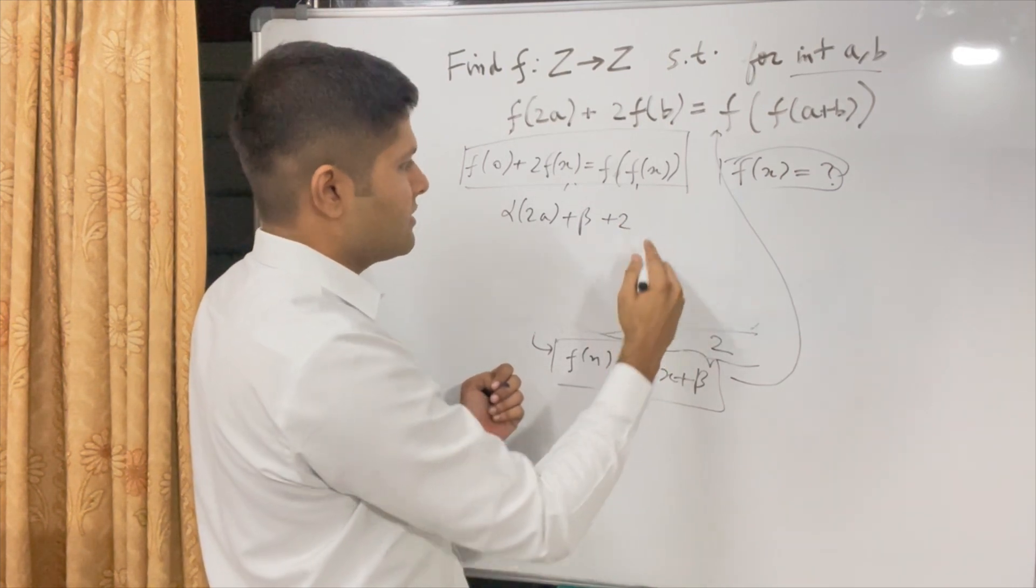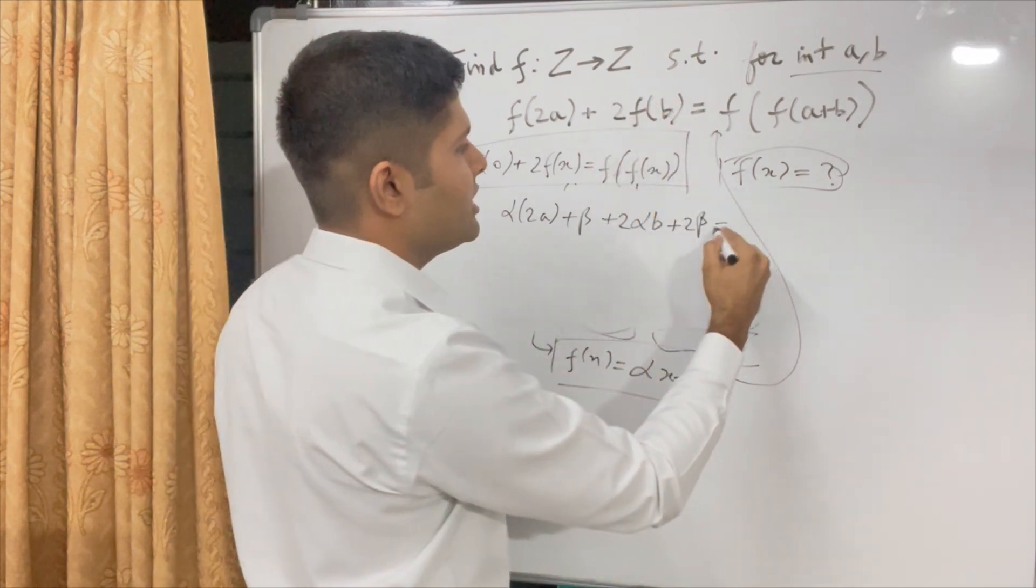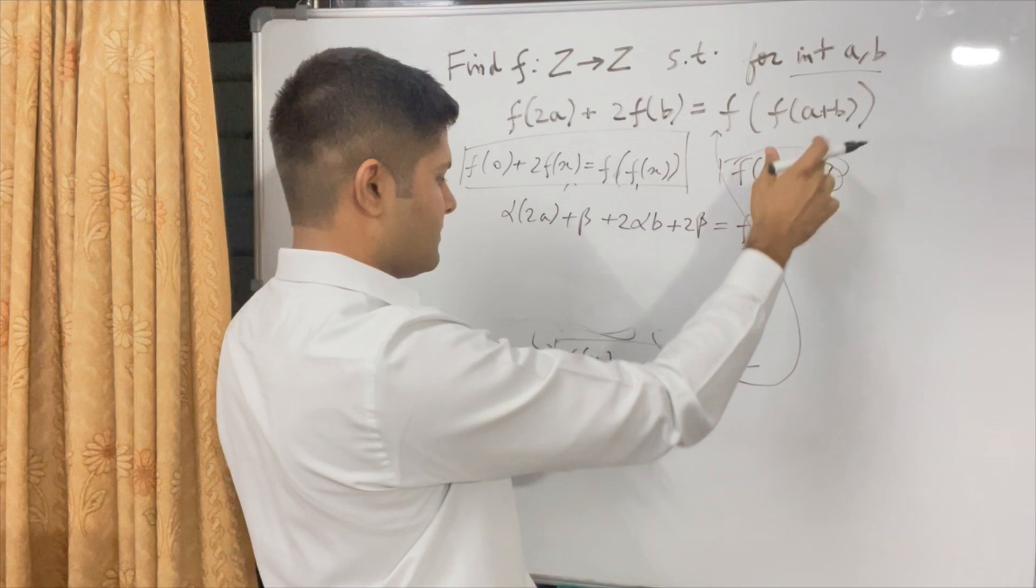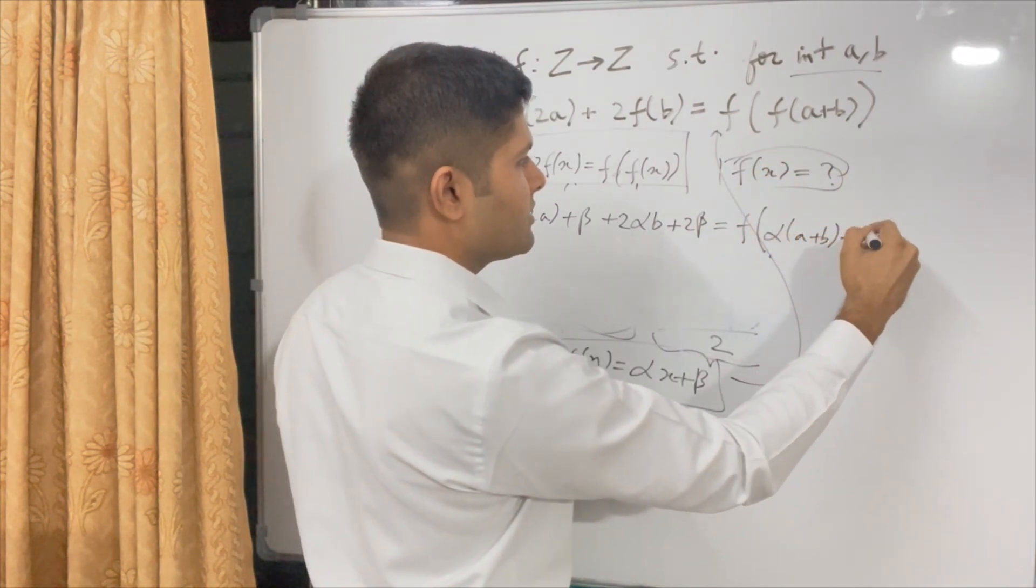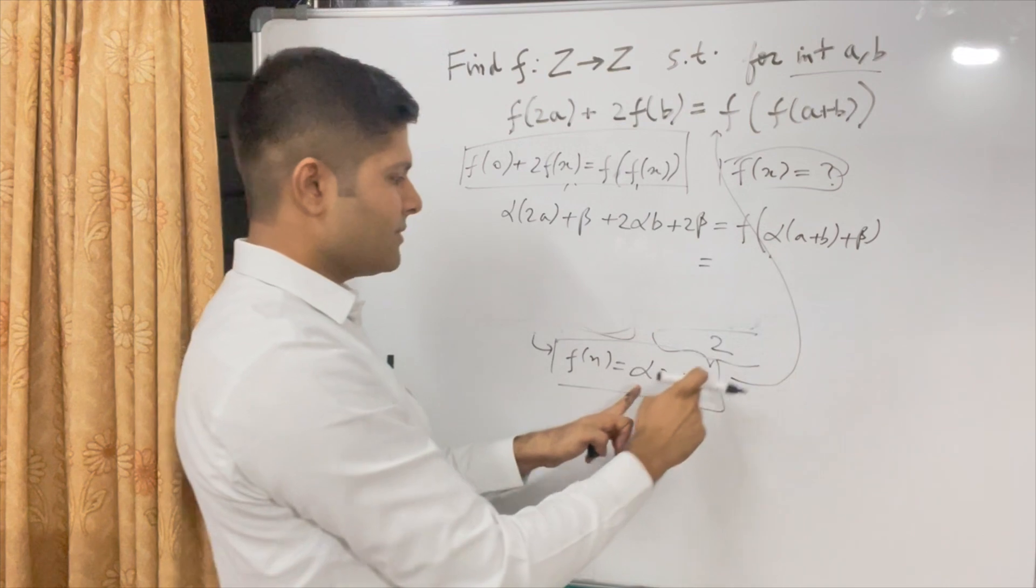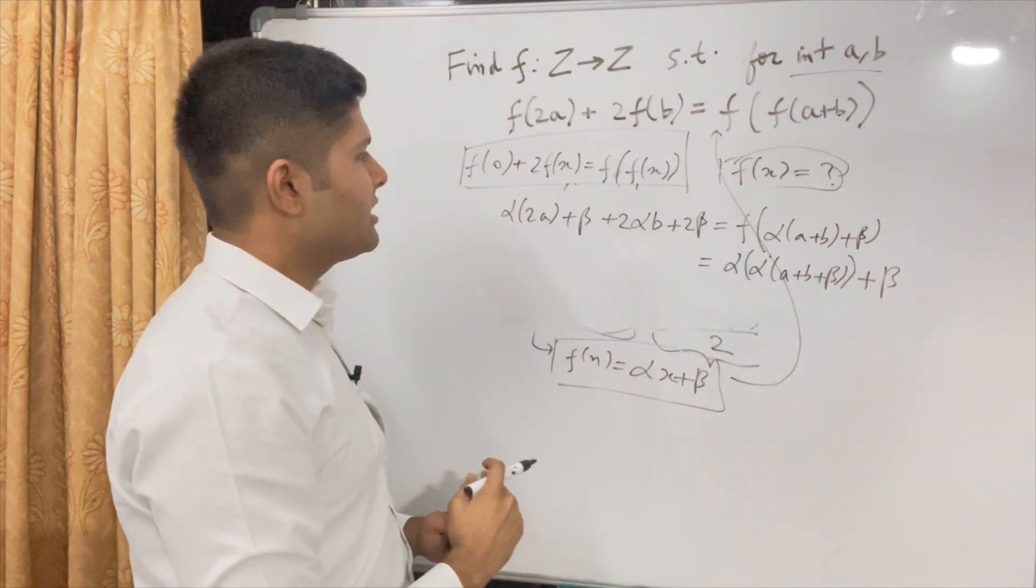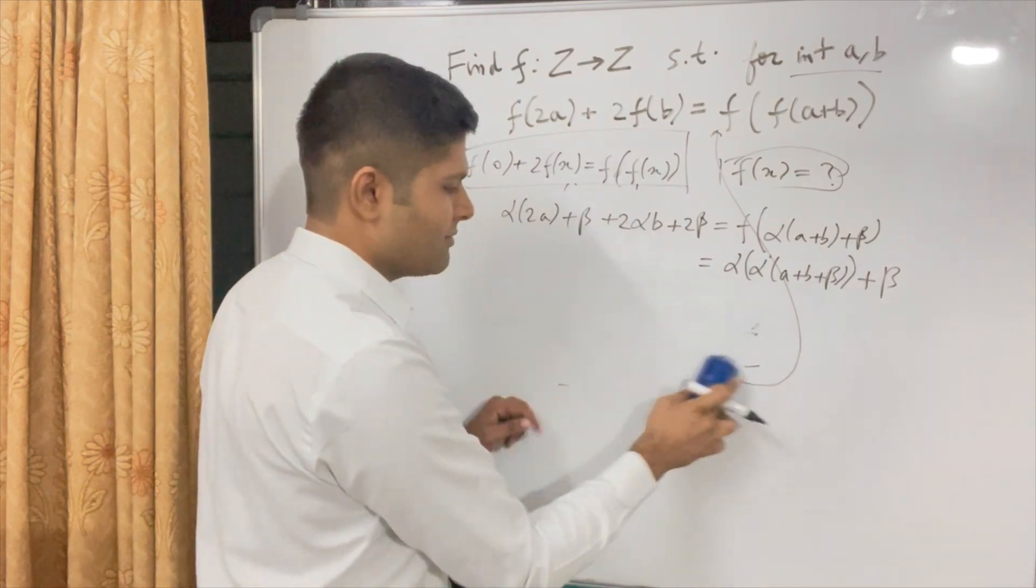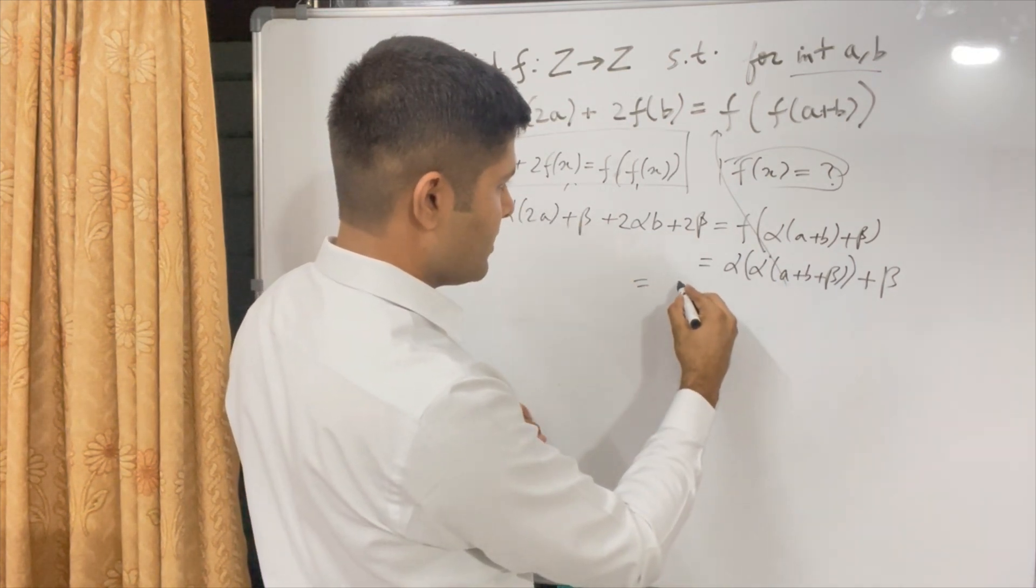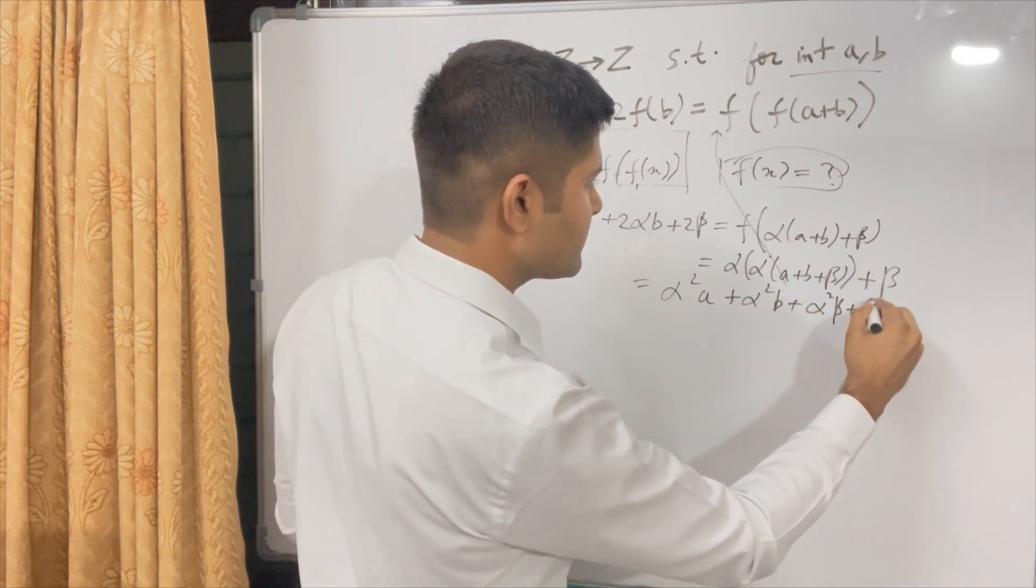Plus 2 times αb + 2β. I just did 2 times of f(b) equal to f(f(a+b)). So here, f(α(a+b) + β). I hope it's visible in the board. Now to conclude this, we again have to apply this variable into this equation. So α times (α(a+b) + β) + β.